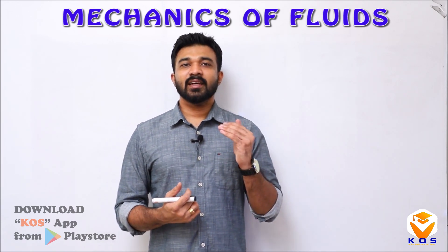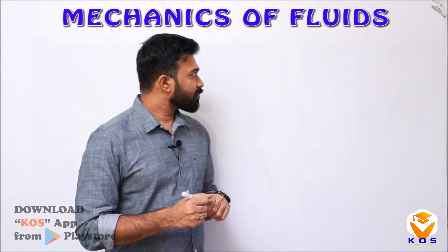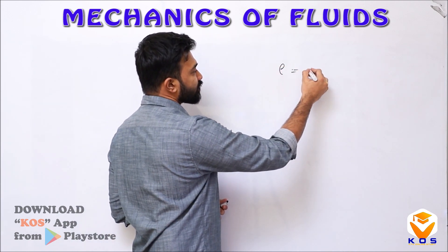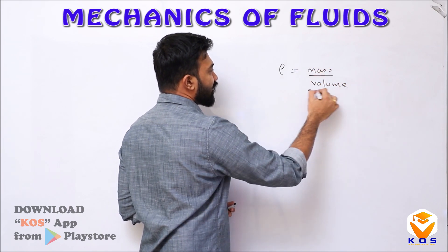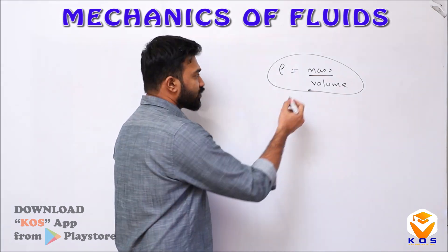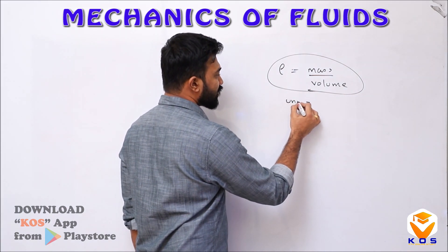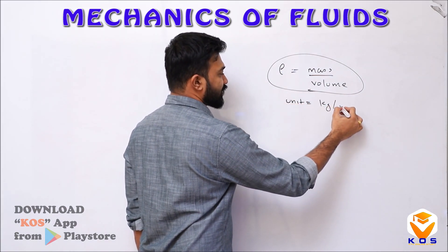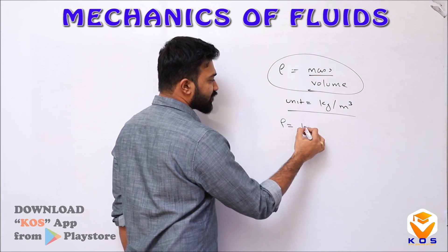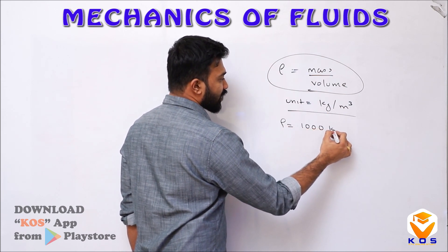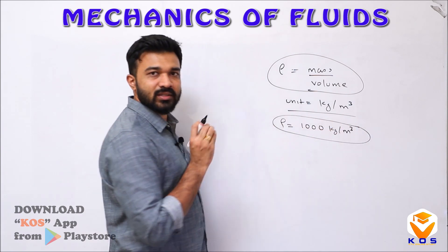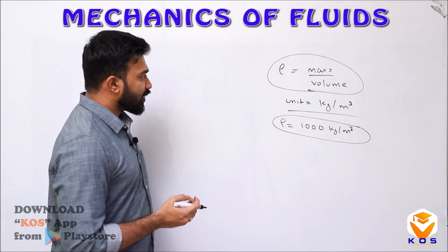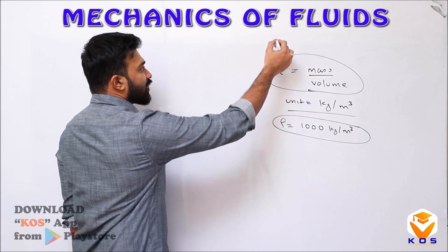Density, represented by rho, is equal to mass divided by volume. The unit is kilograms per meter cube. The density of water is 1000 kilograms per meter cube. Being a liquid, density is constant. Next is density, and then we will learn another important property.